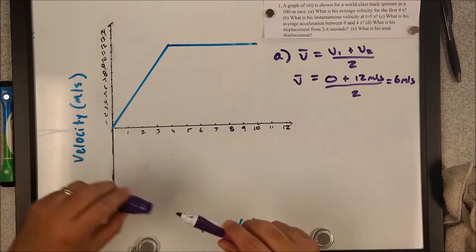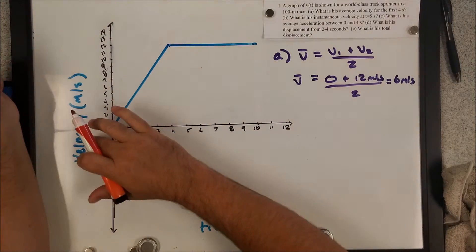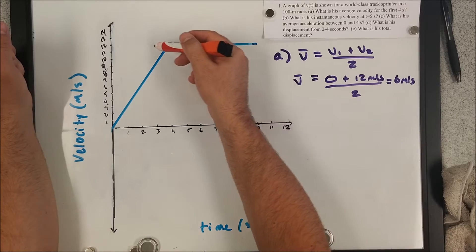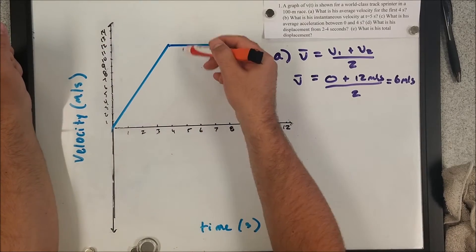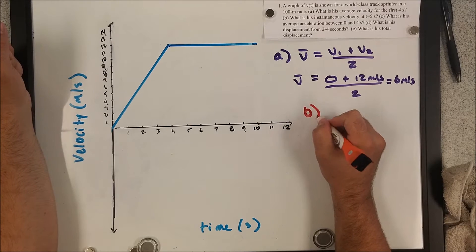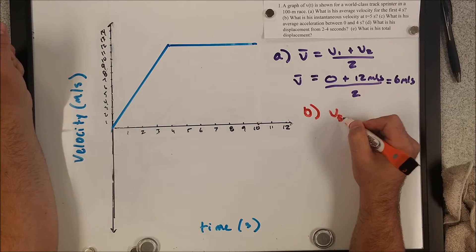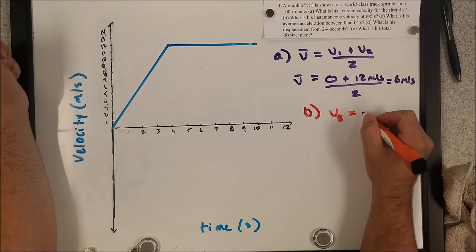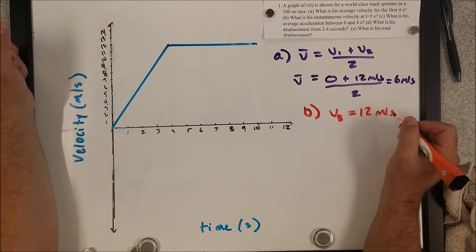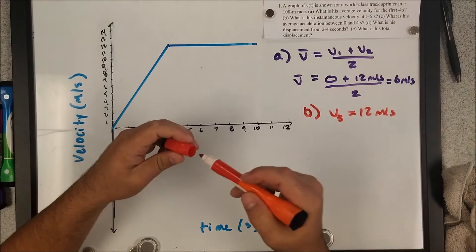B, what is the instantaneous velocity at the fifth second? So for that, we just got to look at our graph because this is a velocity time graph. All we got to do is find where the line is at five seconds and just come on over here to the graph to see that at the fifth second, the velocity is 12 meters per second. The first two aren't utilizing anything new or groundbreaking in terms of analyzing graphs. It's just simply looking at the timeline or the data line.